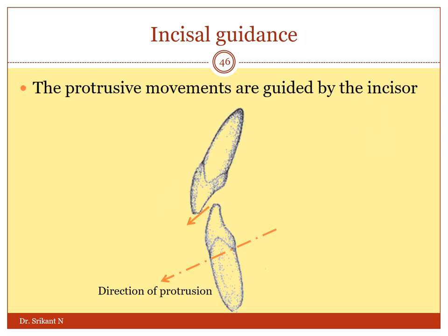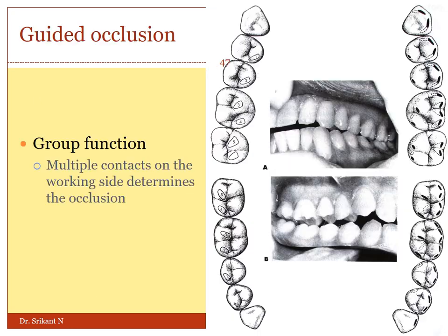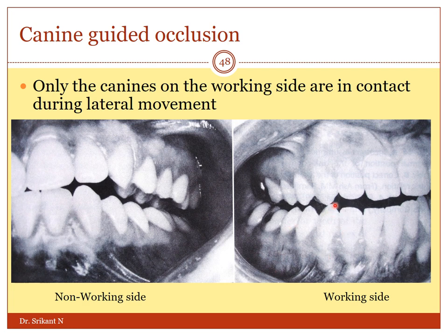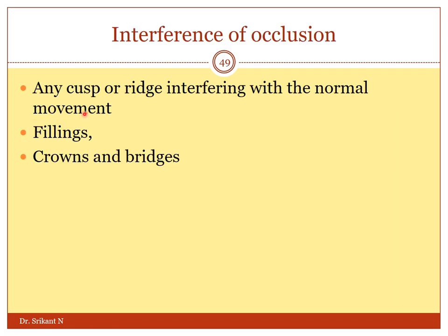The direction in which the incisor moves is called incisal guidance — generally this is the angle it forms in the articulator. Occlusion is a complex phenomenon and there are some guides to it. Sometimes, whenever a person is moving their jaw from left to right, the posterior teeth all come in contact on the working side, whereas on the non-working side they come out of contact. This is called group function. Some of us may have contact only in one tooth — most of the time it is the canine. When the person is moving the jaw laterally, only the canine comes in contact, guiding the occlusion. This is called canine-guided occlusion. Any cusp or ridge interfering with the normal movement is called an interference of occlusion; this may be a filling, crowns and bridges, and may be represented as overhangs, with the patient presenting with pain or uneasiness.